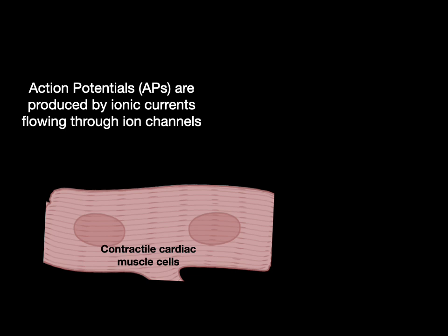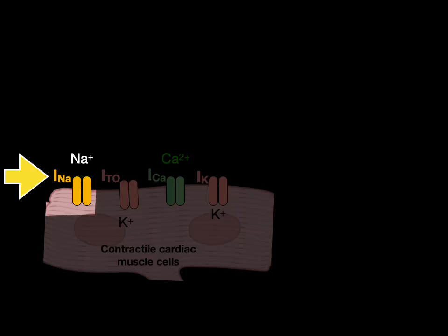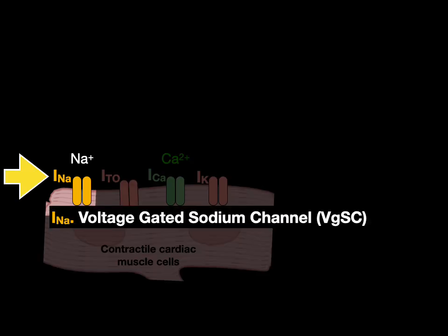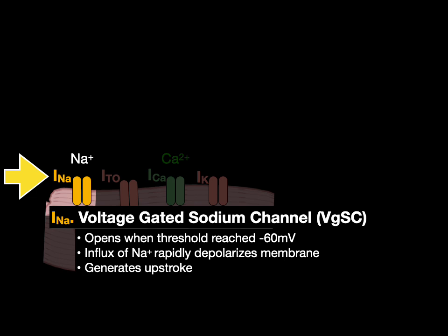Action potentials are produced by ionic currents flowing through ion channels. The first is the sodium current through a voltage-gated sodium channel. This channel opens when threshold is reached at negative 60 millivolts, allowing an influx of sodium that rapidly depolarizes the membrane and generates the upstroke. At the peak of the upstroke at positive 20 millivolts, it transforms to an inactive state and cannot open.